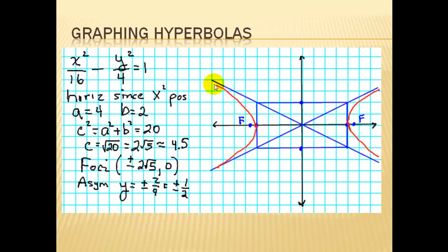I then drew my asymptotes by drawing diagonal lines through the corners of the asymptotes. Those will then give me the boundaries of the hyperbola and allow me to sketch the hyperbola. So I'll come down and go this way, and up this way. It's not going to cross the asymptote.